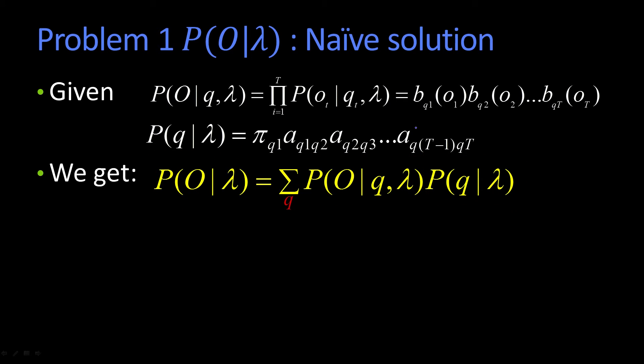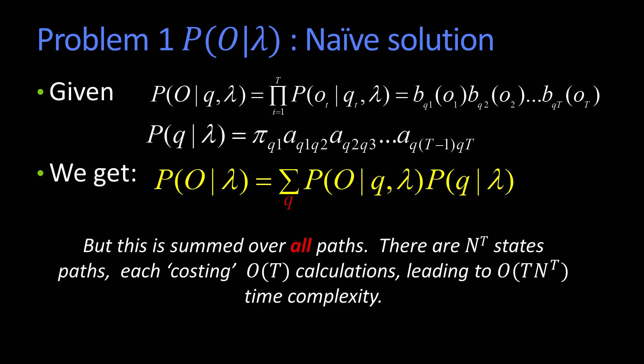Of course, the problem with doing that is it would take you a long time. How long? A really, really, really long time. And the reason is, this is summed over all possible paths, all possible state sequences. Well, there are N states and there are T time steps, that's N to the T. Exponential in time, N to the T. And each one costs T calculations, because I have to figure out the probability of O. So the complexity of that is T times N to the T. That, as we say, is a really long time. So it's not such a good solution.